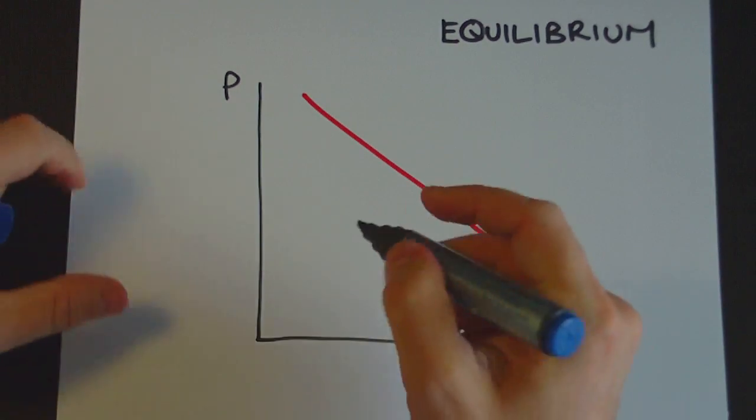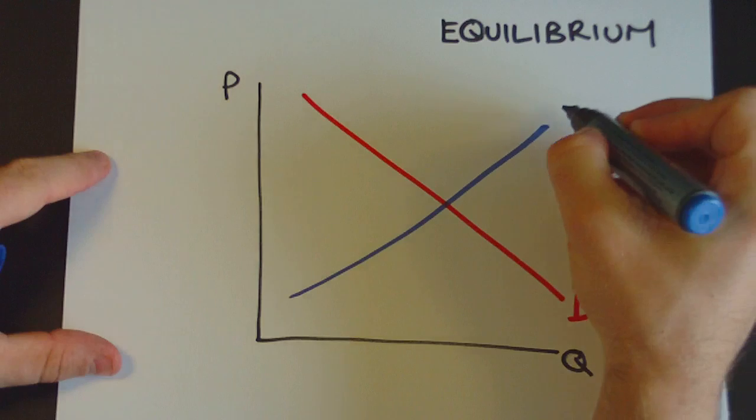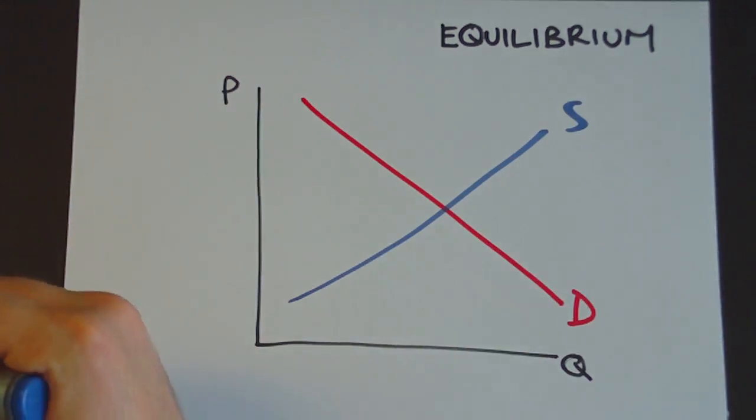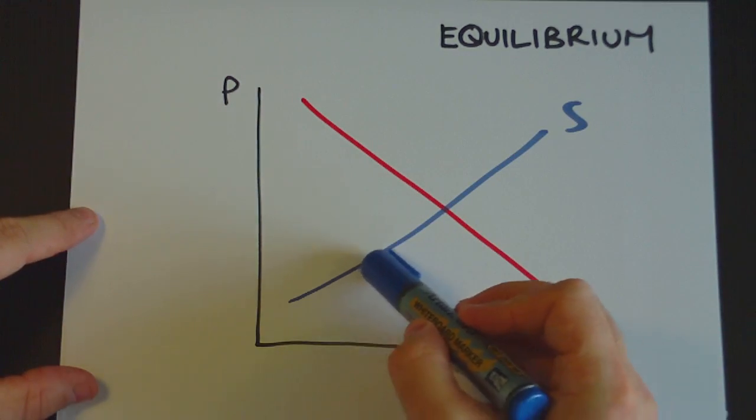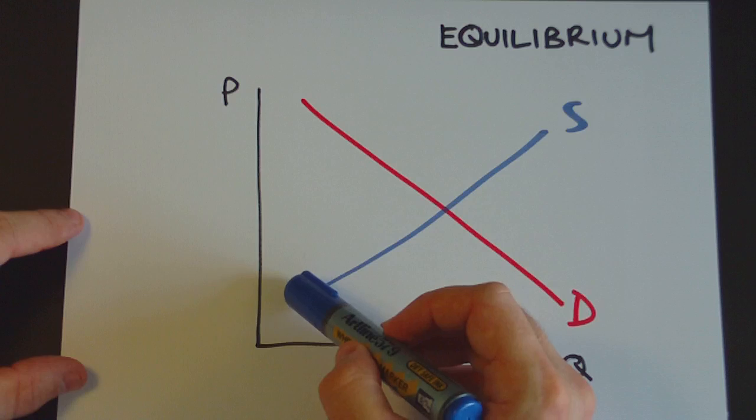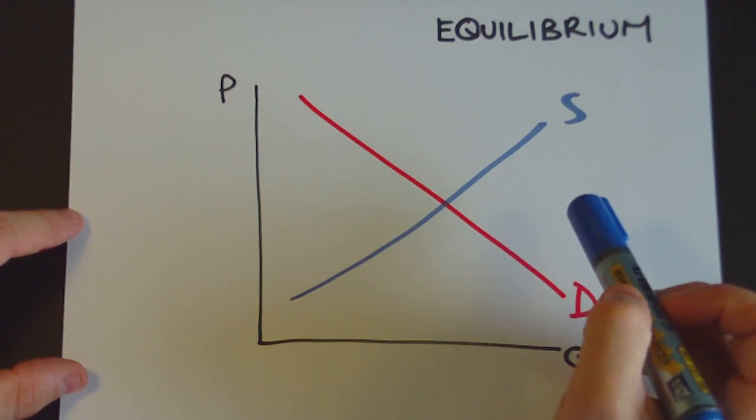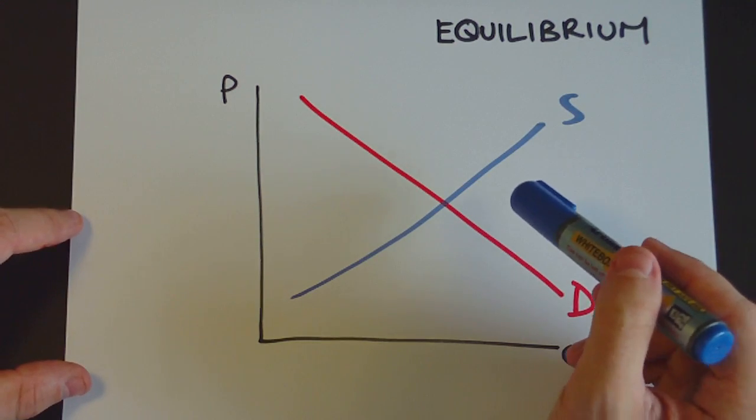But the supply curve which is upward sloping. And why is it upward sloping? Well we're going to see later that it reflects the marginal costs that the firm faces in supplying a good to the market in the short run.